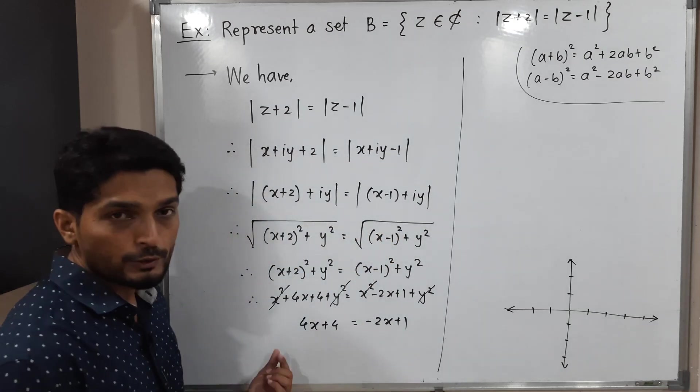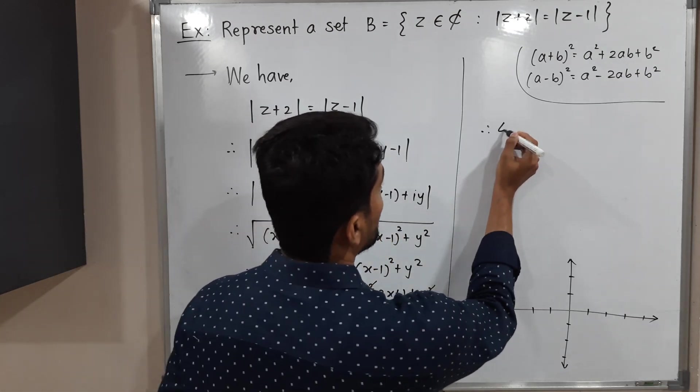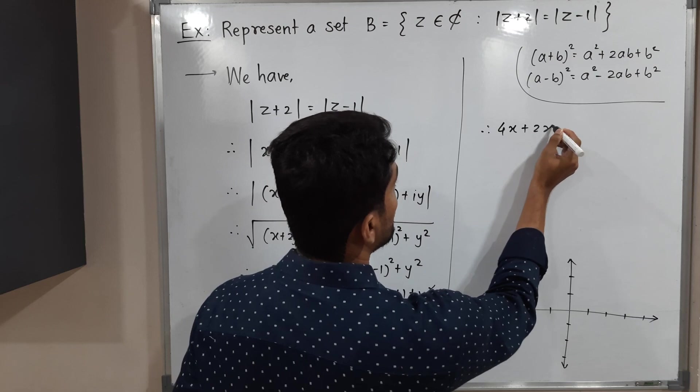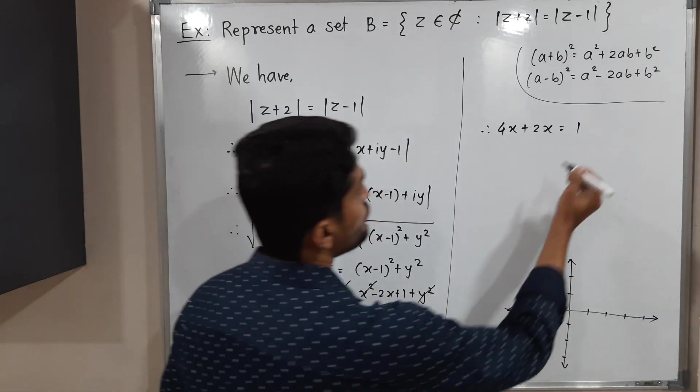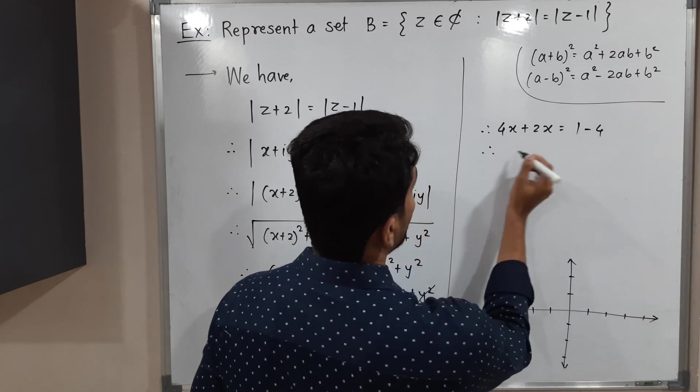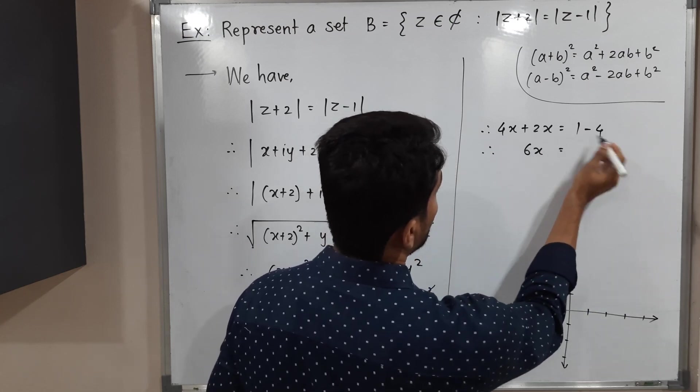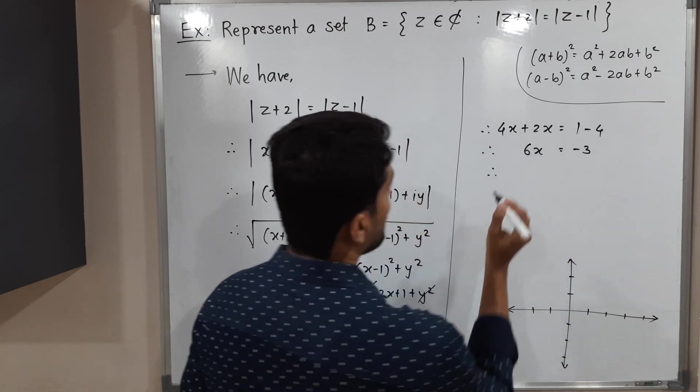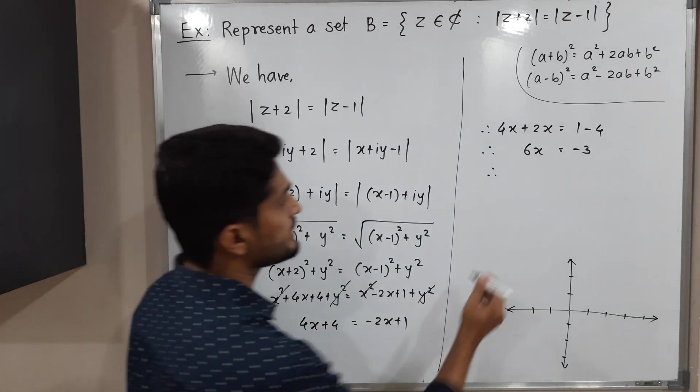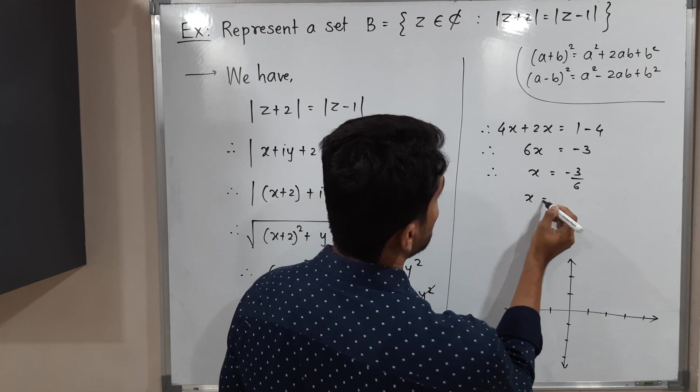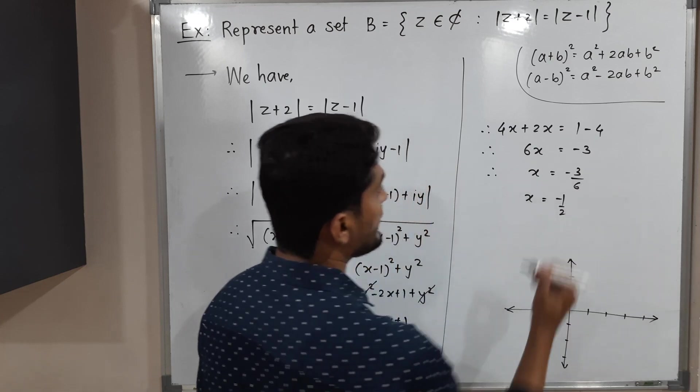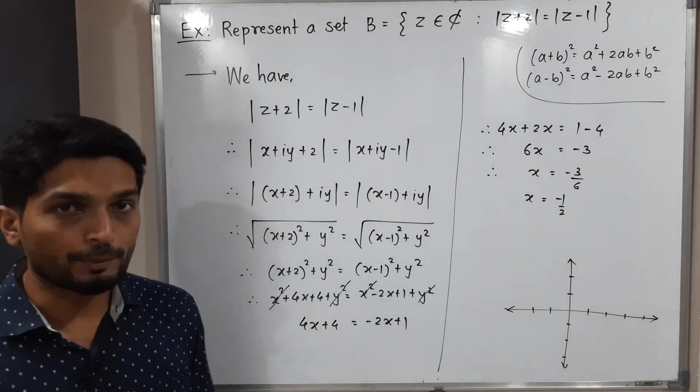See I am shifting minus 2x on this side. Then we will have plus 2x. 1 is already there. I am shifting 4 on that side. So minus 4. So we will have here 6x and here we will have minus 3. Let us divide both sides by 6. So x is equal to minus 3 by 6. That means x is equal to minus 1 by 2 by canceling 3 from numerator and denominator.